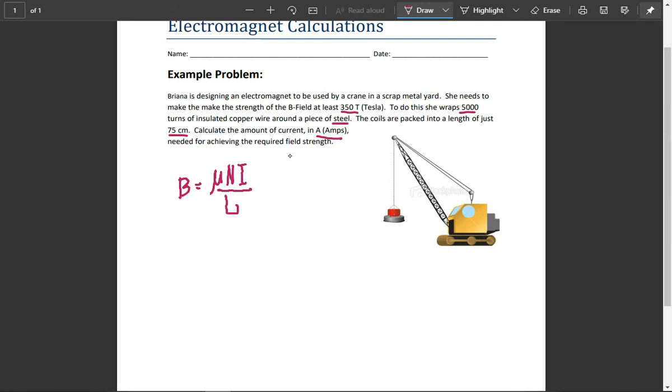We know that the given information we have is the magnetic field strength is 350 tesla, the number of wrapped coils is 5,000, and the length or the density in this case is 0.75 meters. We're trying to figure out what the current is.